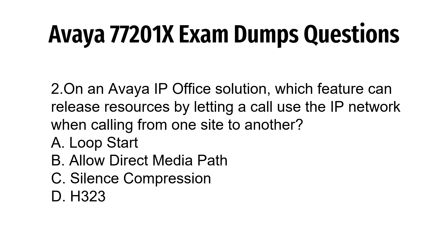Question 2. On an Avaya IP Office solution, which feature can release resources by letting a call use the IP network when calling from one site to another? A. Loop start. B. Allow direct media path. C. Silence compression. D. H.323.